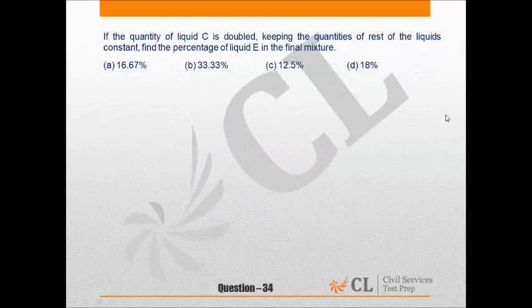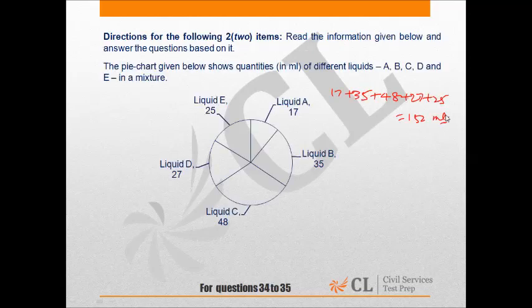In question 34, it is said that the quantity of C is doubled keeping the quantities of rest of the liquids constant. If quantity of C is doubled, it will increase by 48 ml, so total mixture would be 200 ml.